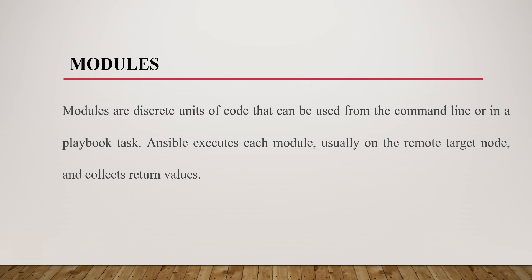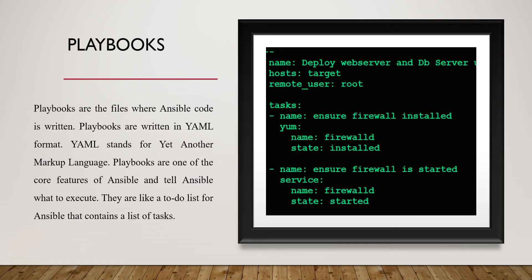Modules are discrete units of code that can be used from the command line or in a playbook. Under the task section, I have used the YUM module and the service module. The YUM module is used to install firewalld, and the service module is used to start the service. Ansible has a large number of modules documented that you can use to achieve your tasks.